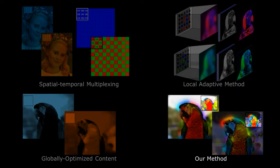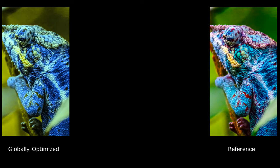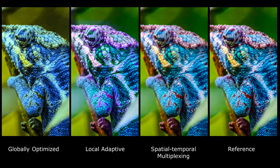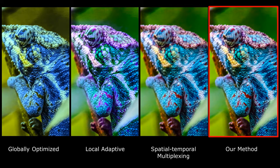Learning from the previous methods, we proposed the locally optimized mixed primary displays. Colors can be off with a globally optimized method when the variation is large. A local adaptive display provides better reproduction and finer details, but color is still wrong sometimes. The spatial temporal method has great color but lower resolution due to subpixel mosaic. Our method provides great color and high resolution and closely resembles the reference image.